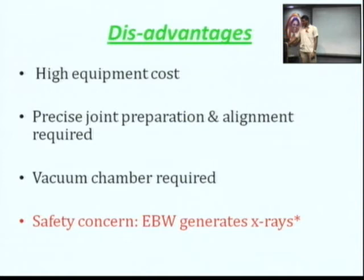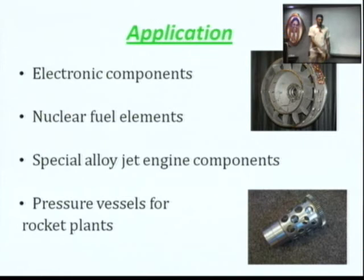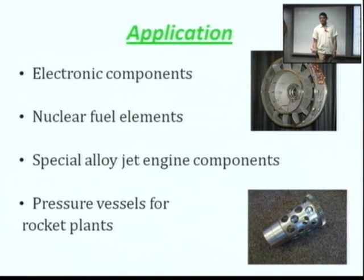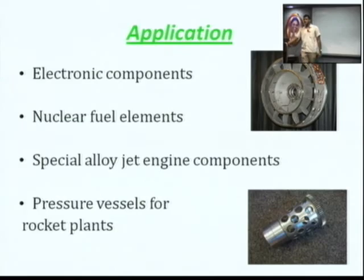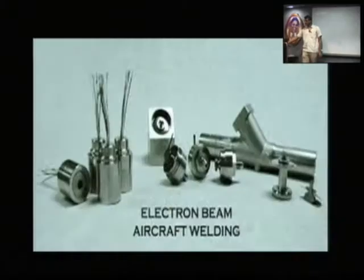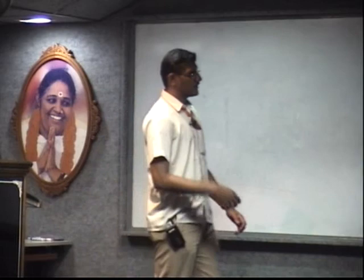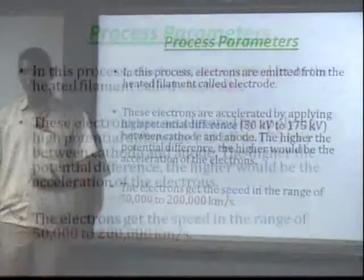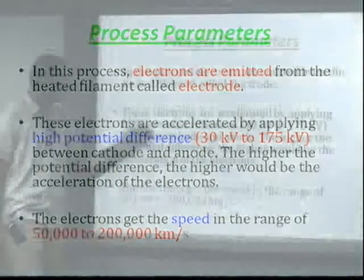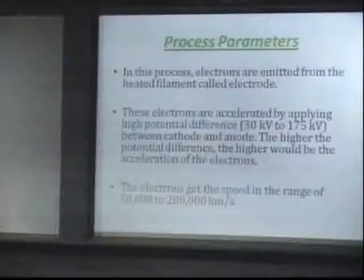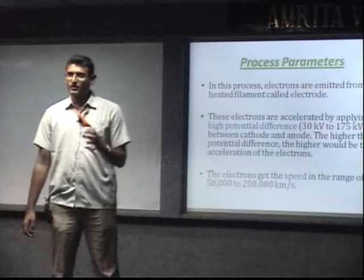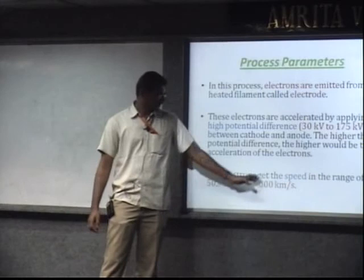The applications include the electrical industry and making airplane parts and jet engine inlets — for that we can go for this type of process. Before we enter into the process, let us see some of the process parameters. The first point is that electrons are emitted from your electrode — that is, the electron gun emits the electrons. Due to the high potential difference, the electron gun produces a lot of electrons, and the speed of the electrons can vary between 50 to 2 lakh kilometers per second by adjusting this high potential difference. This high potential difference is measured by taking the difference between your cathode and your anode.